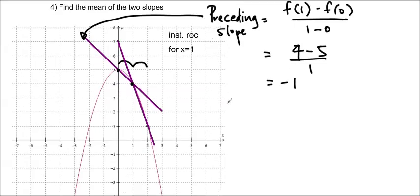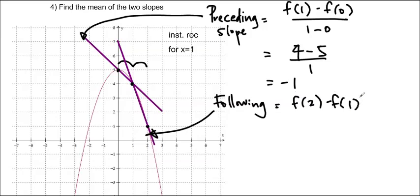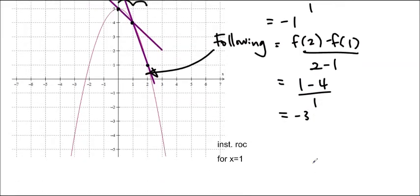And the following slope, which is right here, it goes from 1 to 2. So that's going to be f of 2 minus f of 1 over 2 minus 1. And you can see that f of 2 is equal to 1. So 1 minus 4 over 1, that's negative 3.